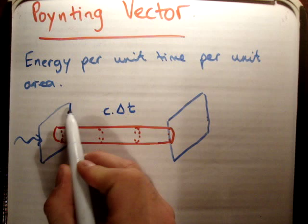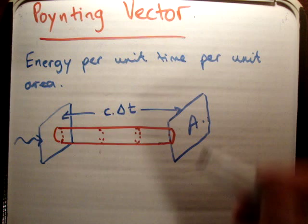So distance is equal to speed times time. We're going to have a distance here of c times delta t. And we're going to say it propagates through an area like that.